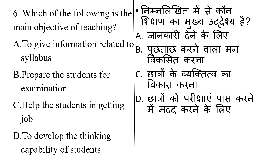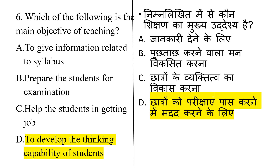Each of the following is the main objective of teaching. Options are: to give information related to the syllabus, to prepare students for examination, to help students get a job, to develop the thinking capability of the students. The correct answer is Option D: the main objective of teaching is to develop the thinking capability of the student so that the student can think on their own.